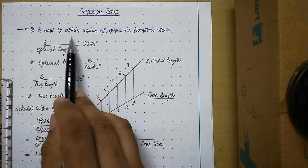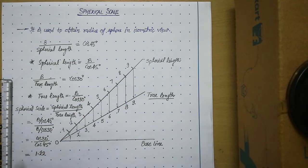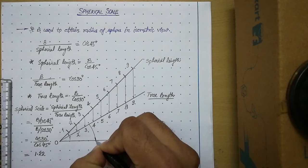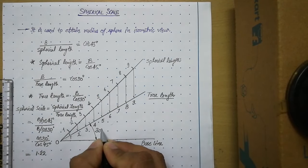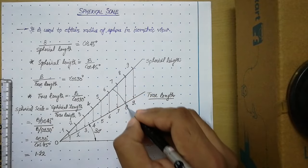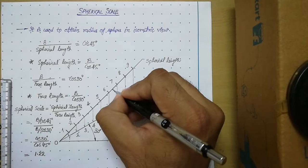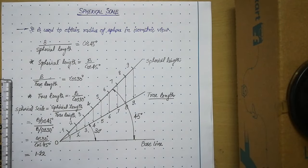You should remember that whenever you draw the isometric view of a sphere, you multiply the given radius by 1.22. At 30 degrees we draw the true scale, and at 45 degrees we draw the spherical scale. I hope the procedure of drawing the spherical scale is clear to you. Thank you very much.